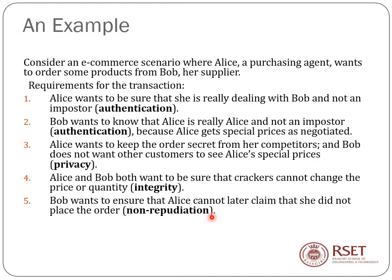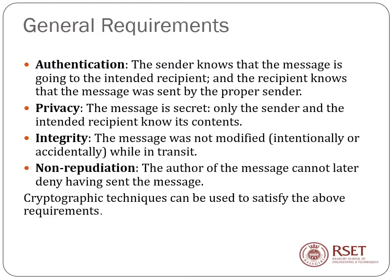Bob also wants to ensure that Alice cannot later claim she did not place the order. Reading through these requirements, you can see they are needed for any transaction. The key concepts highlighted are: authentication — the sender knows the message is going to the intended recipient and the recipient knows the message was sent by the proper sender; privacy — the message is secret, known only to sender and intended recipient; integrity — the message was not modified either intentionally or accidentally while in transit; and non-repudiation — the author of the message cannot later deny having sent it.